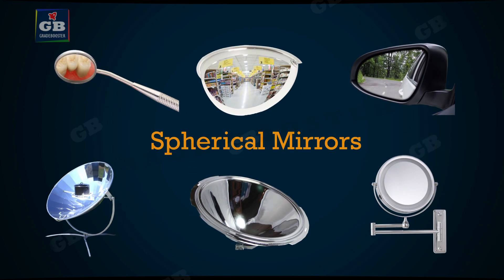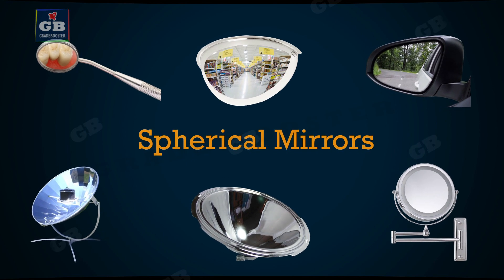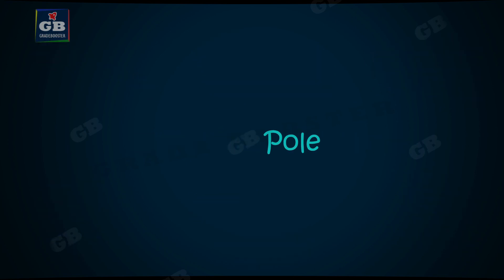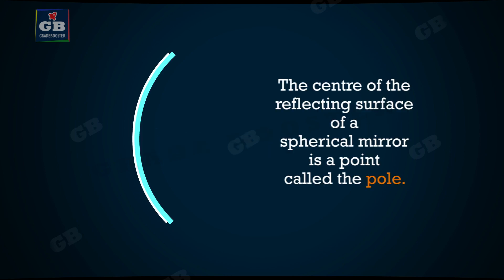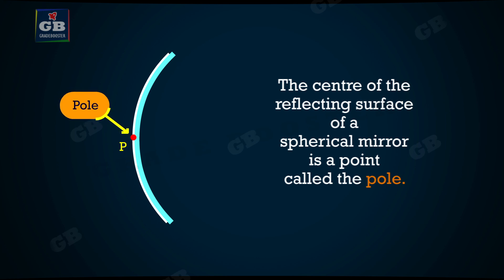To understand the working of these spherical mirrors, we need to know the meaning of certain terms. First term: pole. The center of the reflecting surface of a spherical mirror is a point called the pole. It lies on the surface of the mirror. Pole is denoted by the letter P.